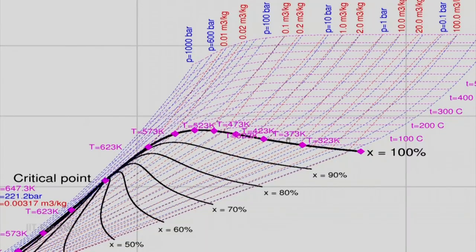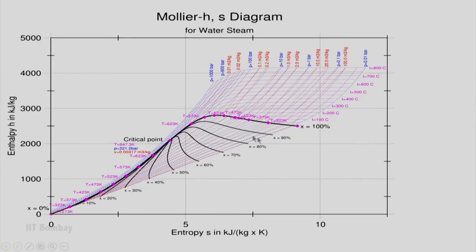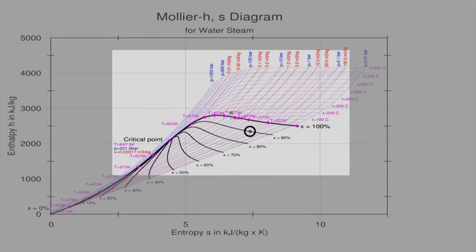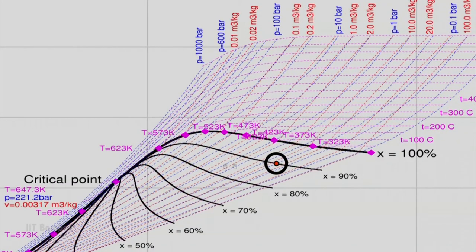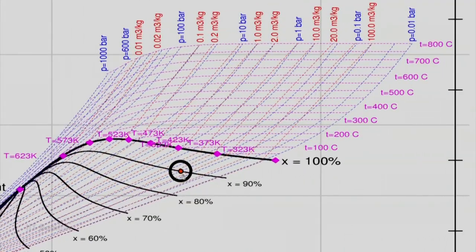Let us locate one point to demonstrate how to extract values from this graph. Let us have a point like this and go close to the point and try to see different things one can see from this. From this graph, this point is x equals 0.9. If I see in this direction, I can see this is 323 Kelvin close to that, so temperature equals 50 degree centigrade. Corresponding to that, I can see the pressure is around 0.1 approximately.